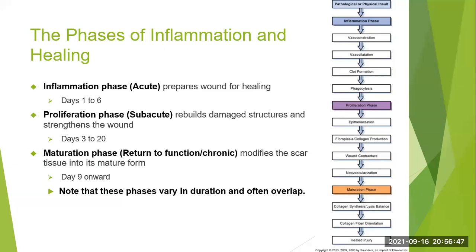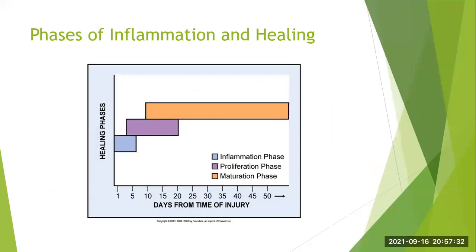The wound then contracts and develops new capillary beds — that's the neovascularization. In the maturation phase, there's a balance between collagen synthesis and collagen lysis. The weak collagen originally set up in the proliferation phase breaks down and is replaced by stronger collagen, with fibers oriented to a more functional orientation, eventually resulting in a healed injury. The maturation phase can start as early as day nine and proceed for a year or more.